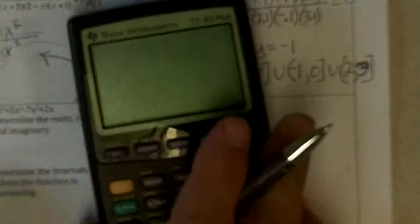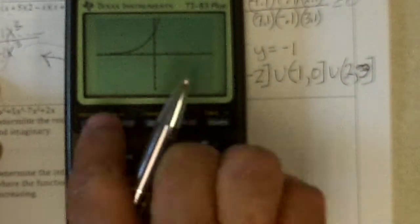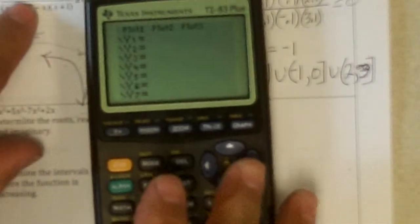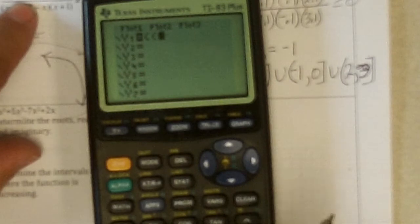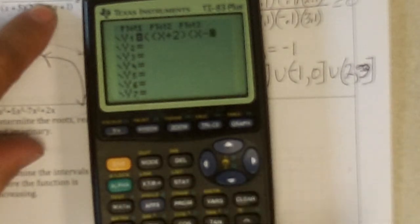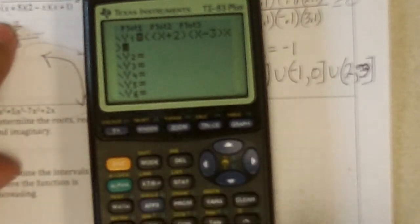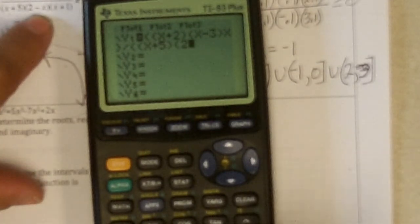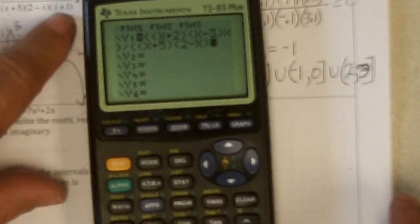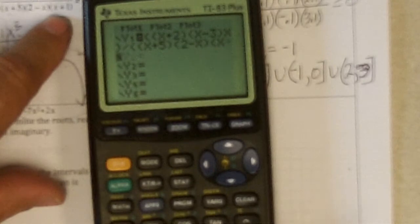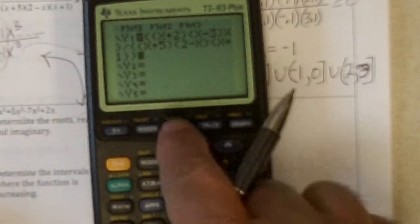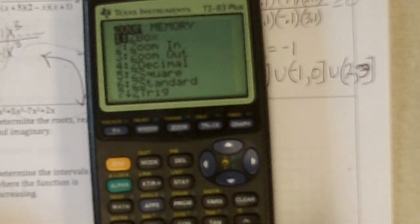And you can check that by typing this into your calculator as long as you make sure you put parentheses around all the numerator. So parentheses. Parenthesis. X plus two. Close parentheses. Parenthesis. X minus three. Close parentheses. And then X. And then close the numerator. Divided by. Parenthesis. For the denominator. Parenthesis. For the. X. Plus five. Close parentheses. Parenthesis. Two minus X. Close parentheses. And. Parenthesis. X. Plus one. Close parentheses. Close parentheses. Close the denominator. Zoom. Six. Should probably do it.